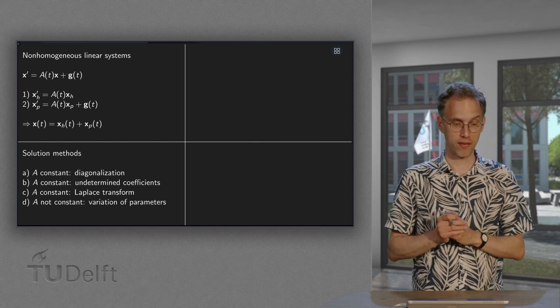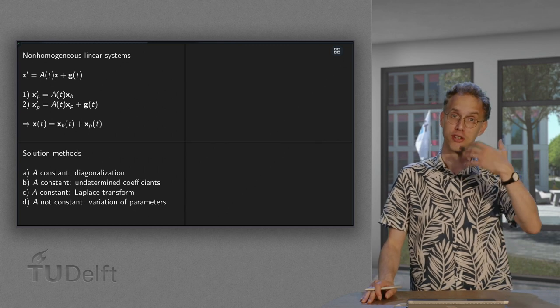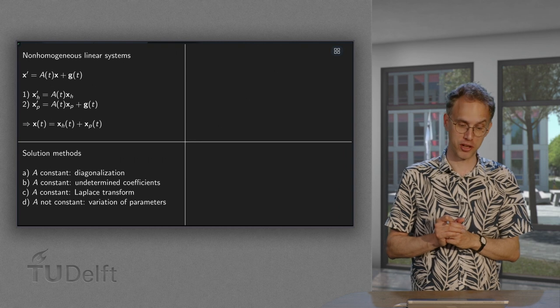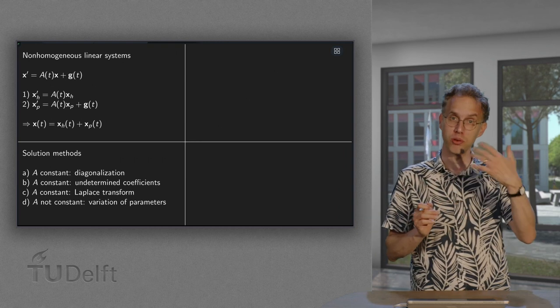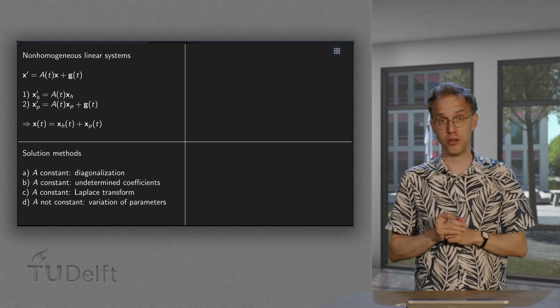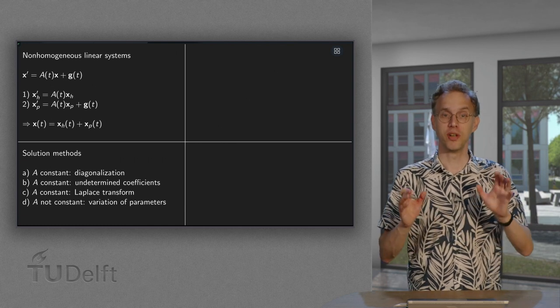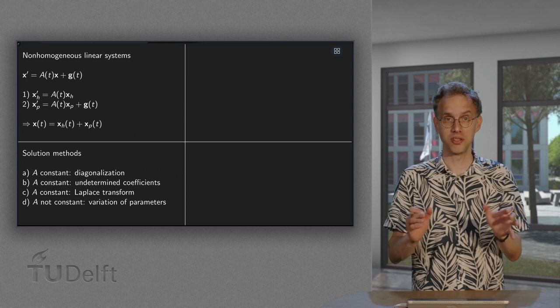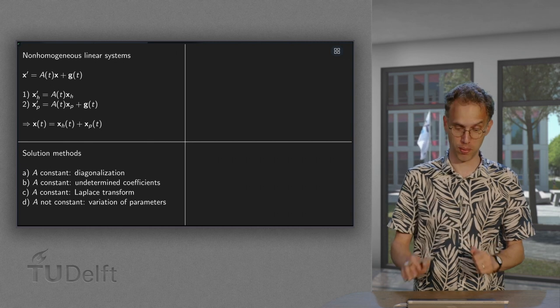And then you have a solution x of s. And then of course the normal problem you have to transform back. So that's the disadvantage of the Laplace transform. First steps work like a wonder but then you still have to transform back. And fourth method if it is not constant you can use variation of parameters which is a bit technical, requires quite a lot of integration. So that's the problem there. But you can deal with more problems.